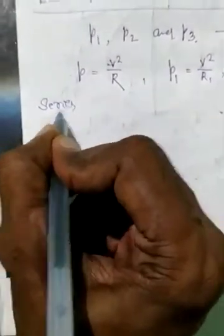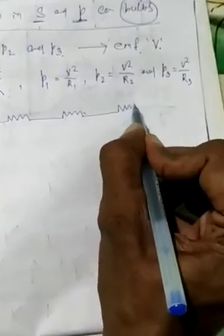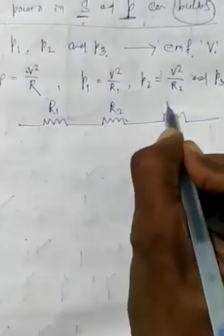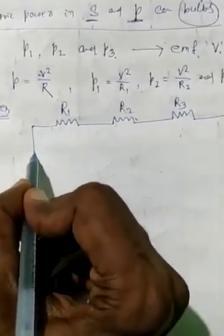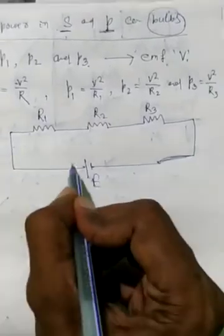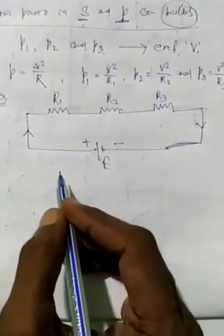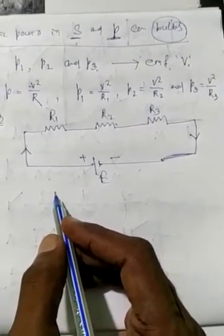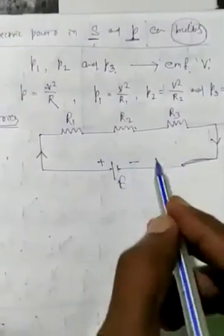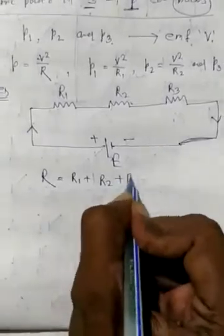We have to find out the net power if all bulbs are connected in series. These are three bulbs having resistances R1, R2 and R3, connected with a source of EMF E — positive terminal and negative terminal. The charge flows from positive to negative, so the direction of current is like this. In series combination, the net resistance is given by R is equal to R1 plus R2 plus R3.